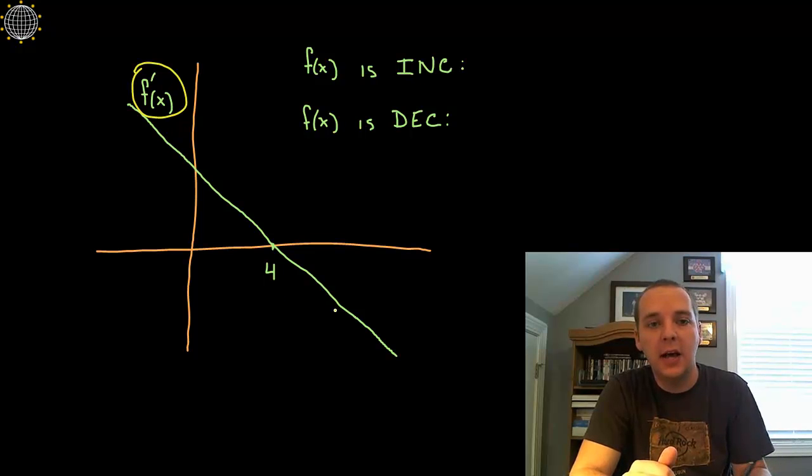Notice this is not the graph of f. If this was f we would just say it's decreasing everywhere and it's not increasing at all, but that's not the case. This is f prime, the graph of f prime, not the graph of f.